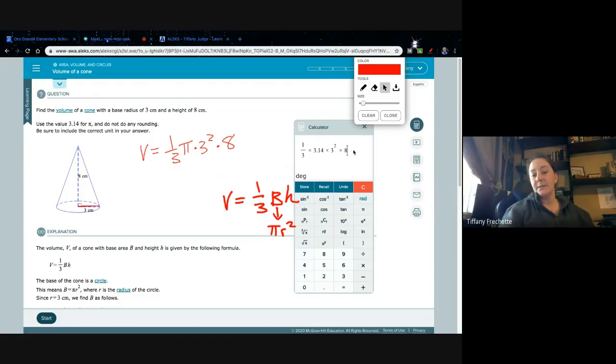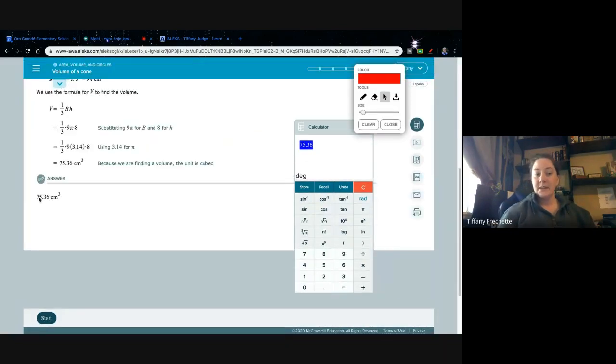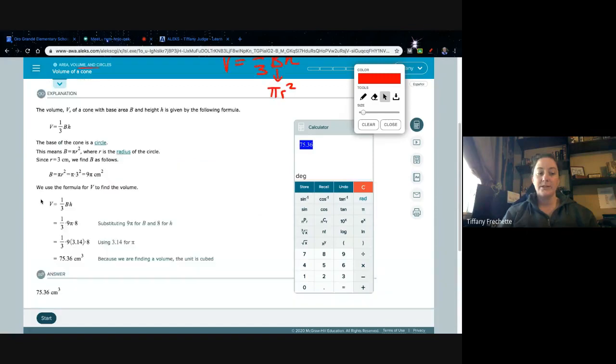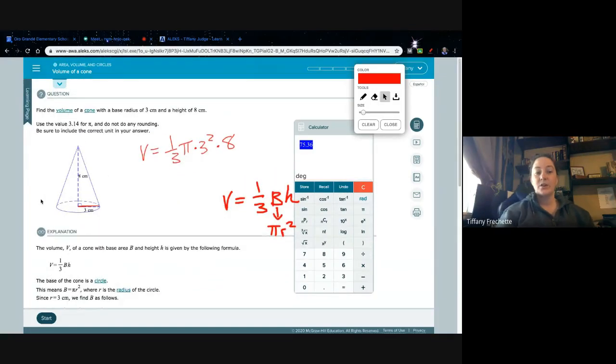So I just put the whole formula in all at once. And the really nice thing about the Alex calculator is I get to see it. And I can see that that is, in fact, what this looks like, except for I wrote pi and they wrote 3.14 here. So I'm going to hit equals, and there is my answer. And if I scroll down to the bottom, 75.36 is exactly what they do. But we do need to make sure we select the correct unit.